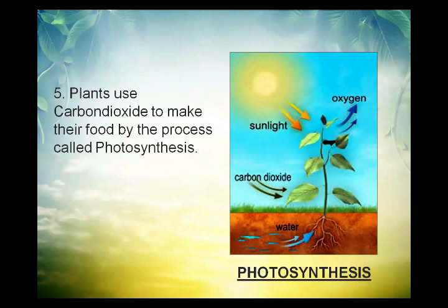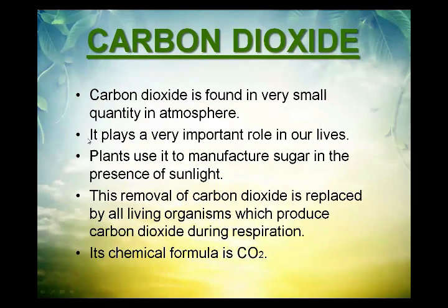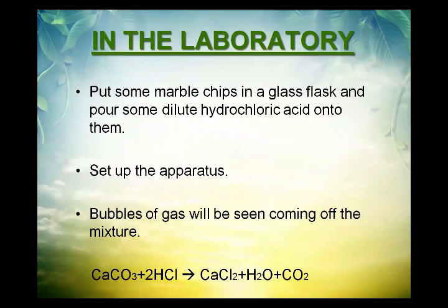To sum up: carbon dioxide is a gas with formula CO2, where carbon is combined with two oxygen atoms by covalent bonding. It is found in very little quantity in the atmosphere. It is not an element, it is a compound. Plants use it to manufacture their food, and all living things release carbon dioxide during respiration. It is acidic in nature — blue litmus paper turns red in its presence. In the kitchen it is prepared by baking powder and vinegar, and in the laboratory by marble chips or calcium carbonate reacting with hydrochloric acid.